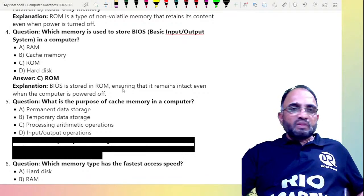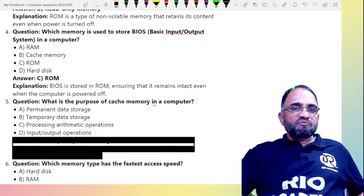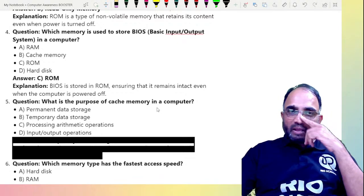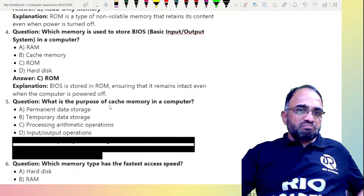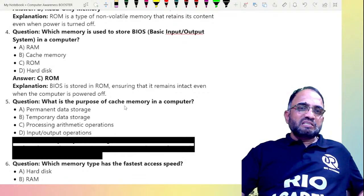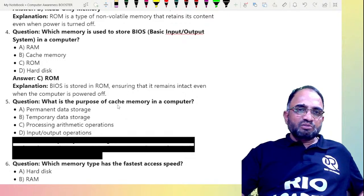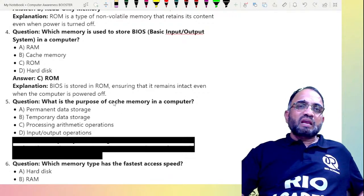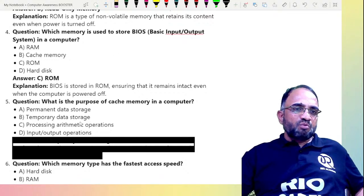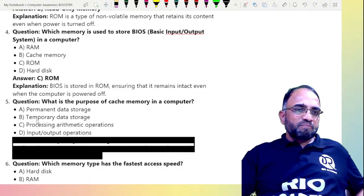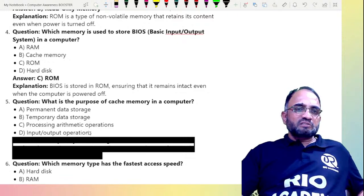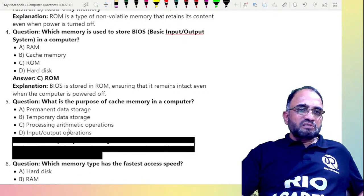Coming to the next question: what is the purpose of cache memory in a computer? Some people pronounce it as 'cache' memory — my engineering college professor used to pronounce it that way. Now, is cache memory for permanent data storage, temporary data storage, processing arithmetic operations, or input/output operations?